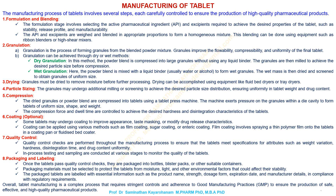Compression. The dried granules or powder blend are compressed into tablets using a tablet press machine. The machine exerts pressure on the granules within a die cavity to form tablets of uniform size, shape, and weight. The compression force and dwell time are controlled to achieve the desired hardness and disintegration characteristics of the tablets.